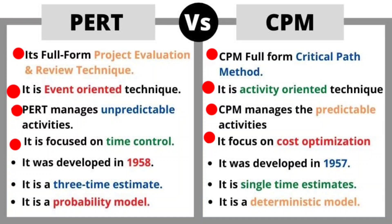In the fifth point, PERT was developed in 1958 whereas CPM was developed in 1957. In the sixth point, PERT uses three time estimates and CPM uses a single time estimate.